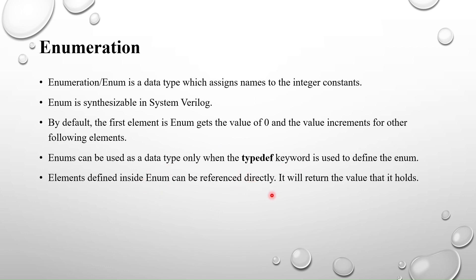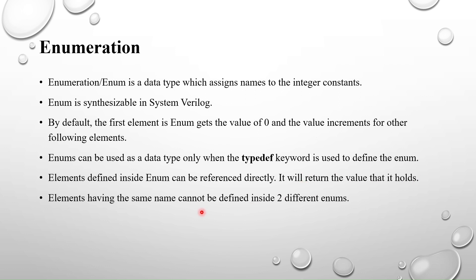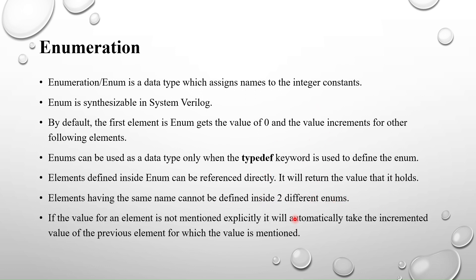Elements defined inside the enum can be referenced directly and will return the value they hold. Also, elements having the same name cannot be defined inside two different enums. If you are having two enums in the same module, you cannot use the same name for two different enums — it will give a compilation error. You must use unique names across multiple enums in the same module.